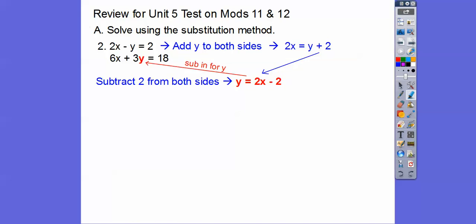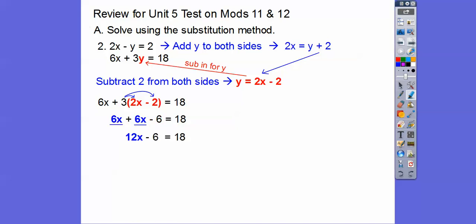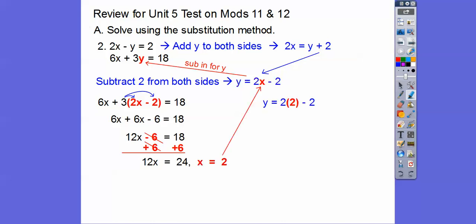Now we can substitute that in for y. We put in 2x minus 2, distribute the 3 through, and combine like terms. 6x plus 6x is 12x. 18 plus 6 is 24, so 12 goes into 24 two times, giving x equals 2. Then we plug 2 back in: 2 times 2 is 4, 4 minus 2 is 2, so our ordered pair is 2 comma 2.